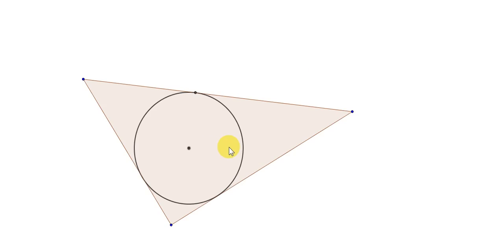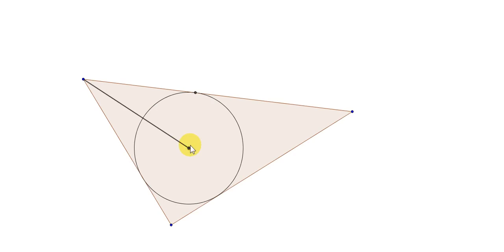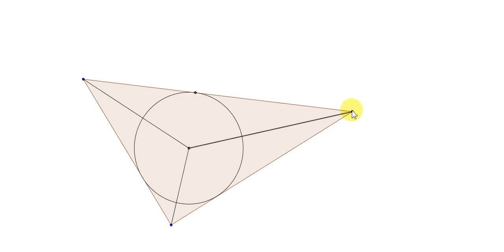To get the area of the incircle of a triangle, we get the area of three triangles that make up this triangle. I'll draw in three triangles inside this triangle by joining the center to the corners. If we add these three triangles together, we get the area of the big triangle.